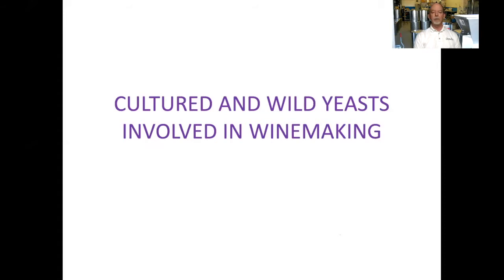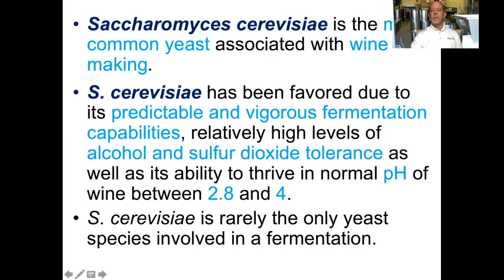Today we will be talking about cultured and wild yeast involved in wine making. Saccharomyces cerevisiae is the common yeast associated with wine making. S. cerevisiae has been favored due to its predictable and vigorous fermentation capabilities, its relatively high levels of alcohol and sulfur dioxide tolerance, as well as its ability to thrive in the normal pH of wine between 2.8 and 4. S. cerevisiae is rarely the only yeast species involved in fermentation.